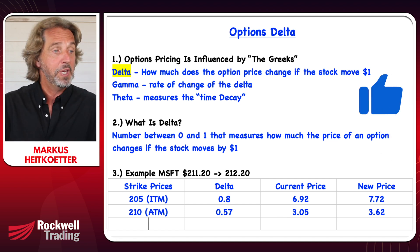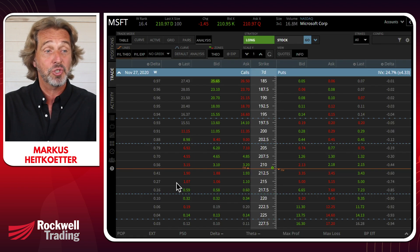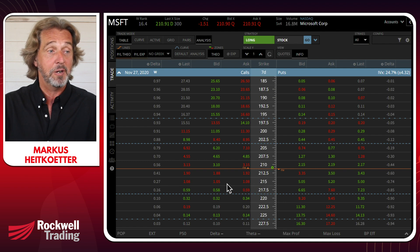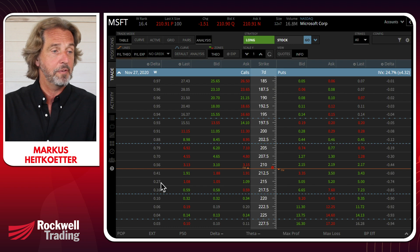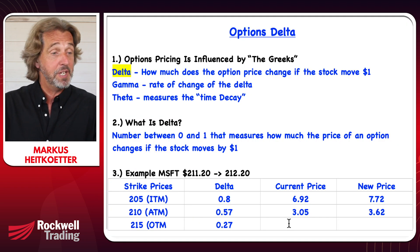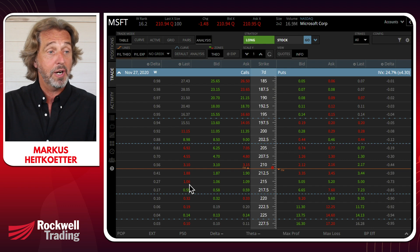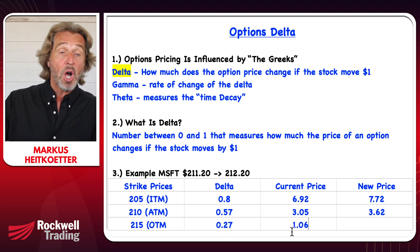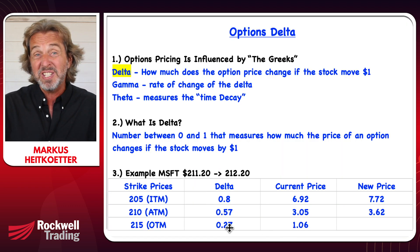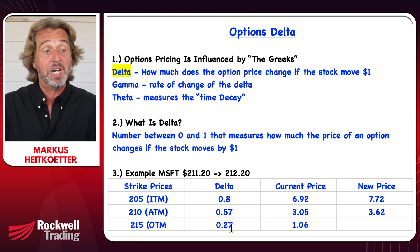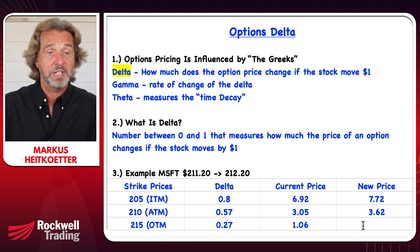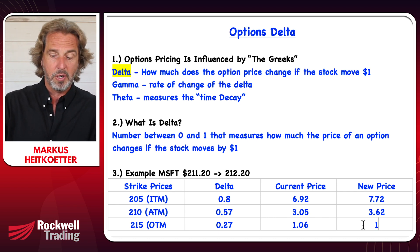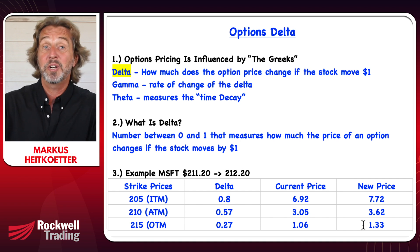Now we're using a strike that is out of the money — a strike of 215. That would be out of the money, and the delta is 0.27. The current price of this option is $1.06. So if the stock moves up by a dollar, this option only moves up by 27 cents, moving to $1.33.